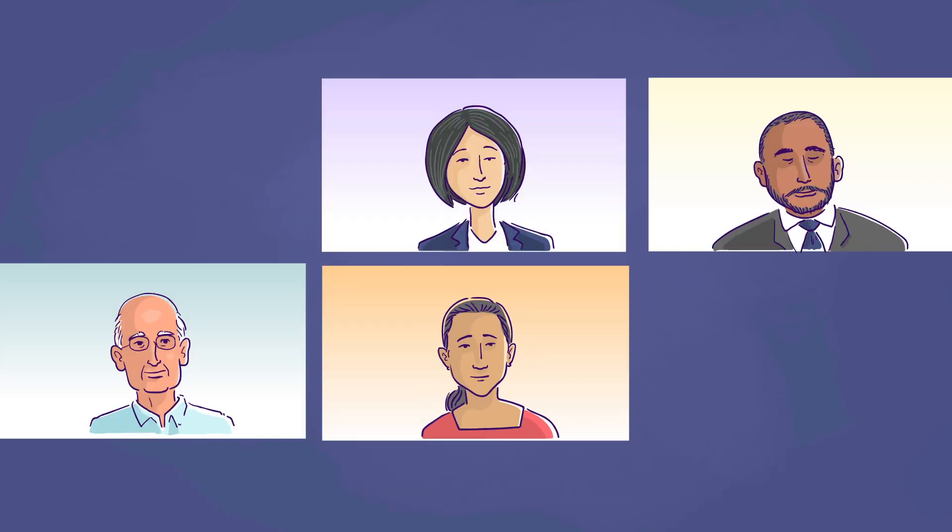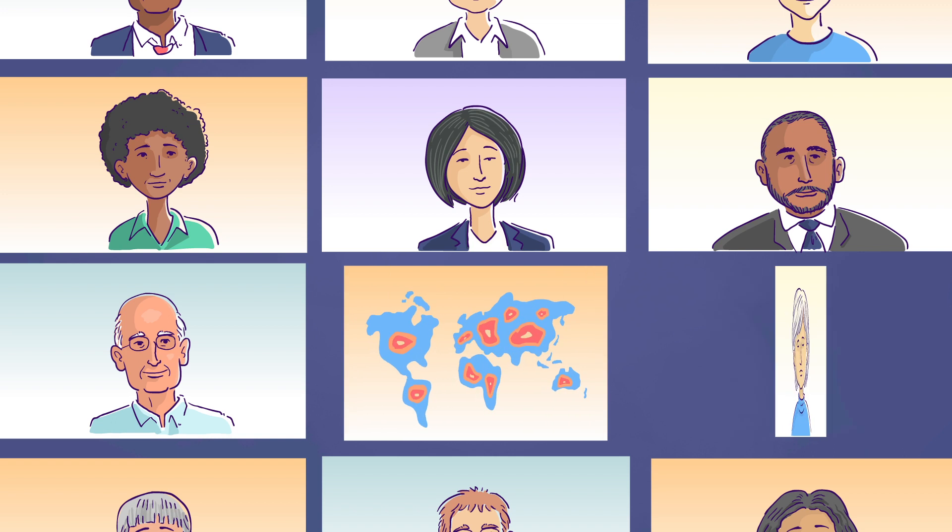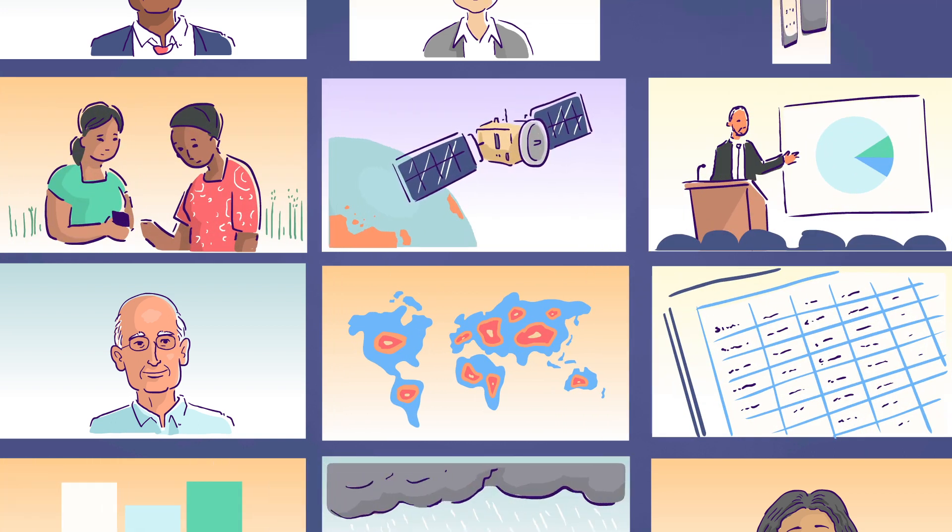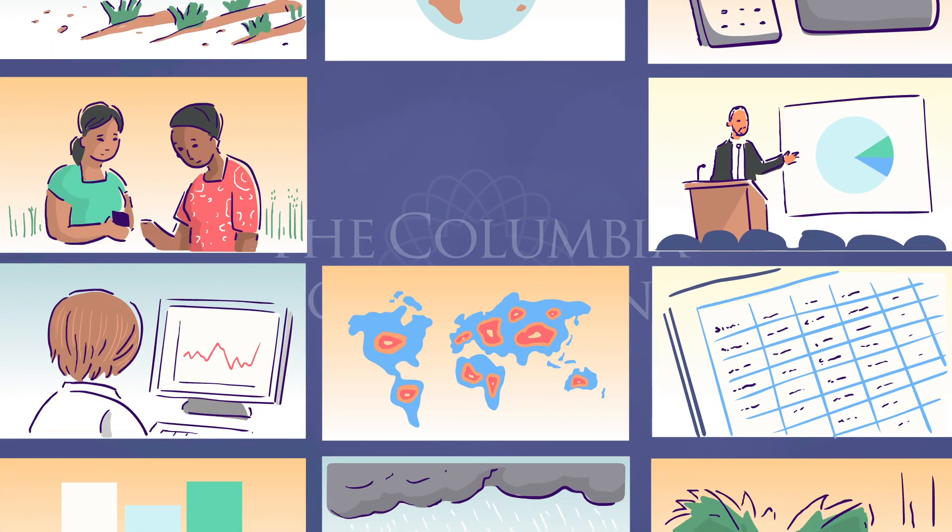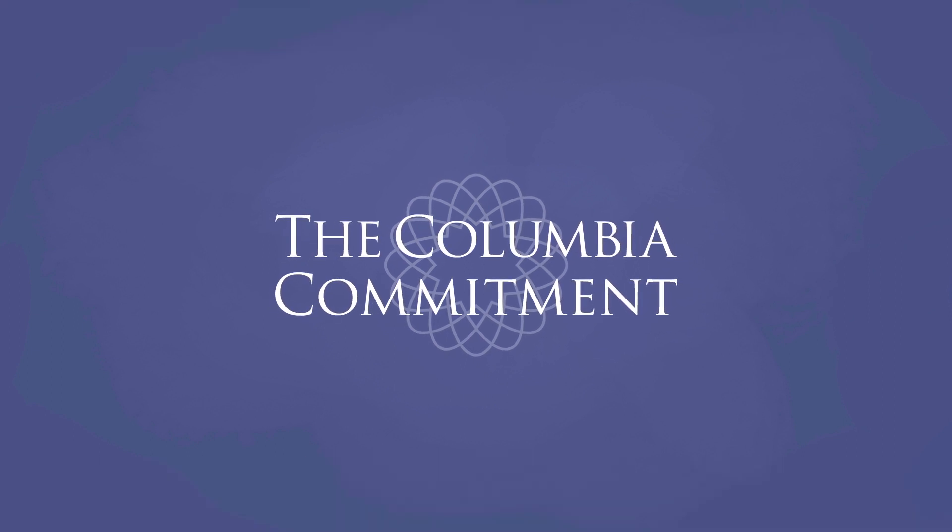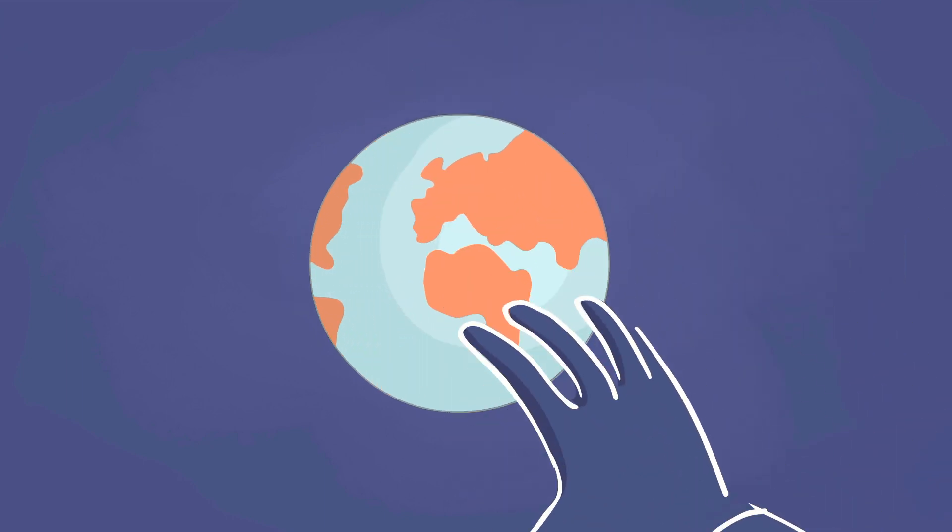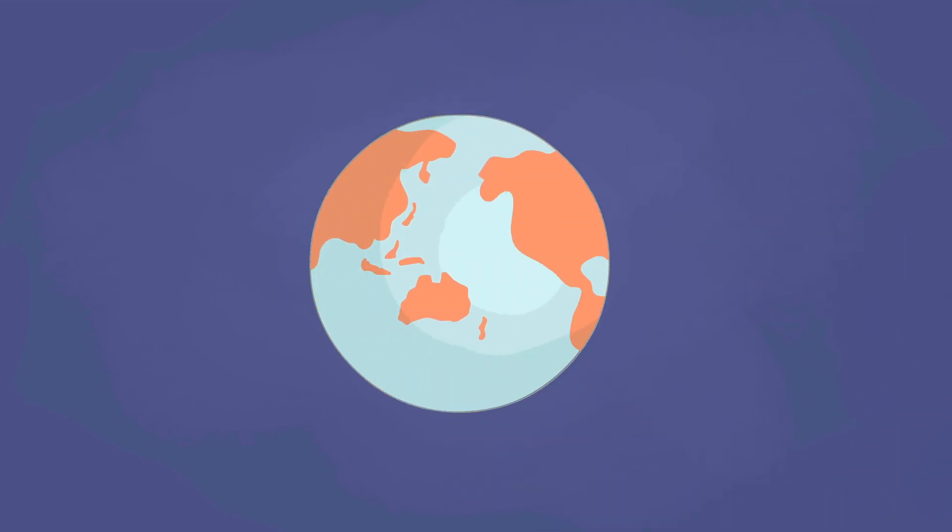We are Columbia University, and we know that climate solutions are possible. For decades, we have led the way, and with your support, we'll continue. The Columbia Commitment to Climate Response is a five-year sprint to solve urgent and complex challenges. This is our commitment to you, and to our shared future.